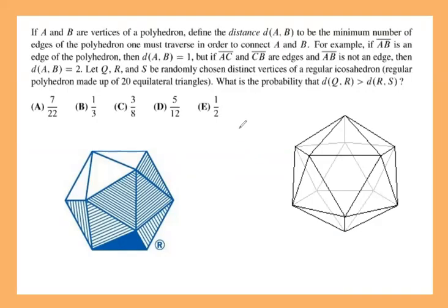Hello everyone. This is the last question on 2023 AMC 10A, and also it was number 21 on 12A. It's a straightforward question but kind of hard to understand what's going on. First, it says there are two points on a polyhedron, and we have a special definition: the distance between A and B is the minimum number of edges of that polyhedron you have to travel to get from point A to B.